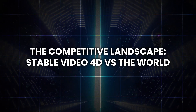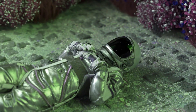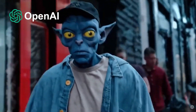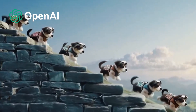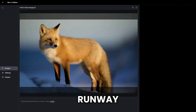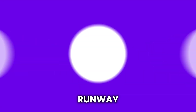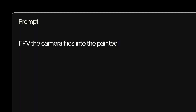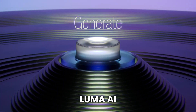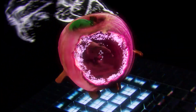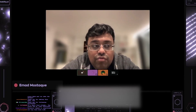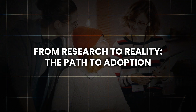The competitive landscape — Stable Video 4D vs. the world. While Stable Video 4D is breaking new ground, it's entering an increasingly crowded field. OpenAI's Sora is known for its ability to generate high-quality videos from text prompts, but it lacks Stable Video 4D's ability to generate multiple novel views. Runway excels at video editing and special effects, but doesn't offer the same level of 3D manipulation. Haper focuses on real-time video enhancement, serving a different niche. Luma AI, while strong in 3D object reconstruction, doesn't currently offer the same level of dynamic video generation. Stable Video 4D's unique combination of 3D understanding and temporal coherence sets it apart in the field.